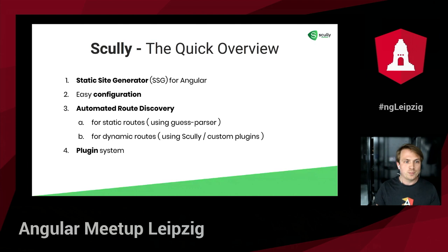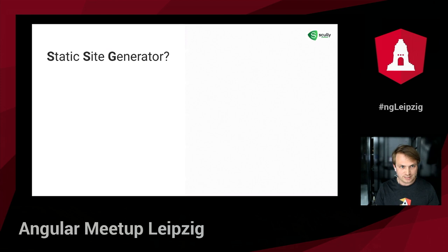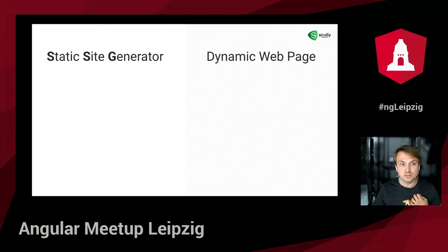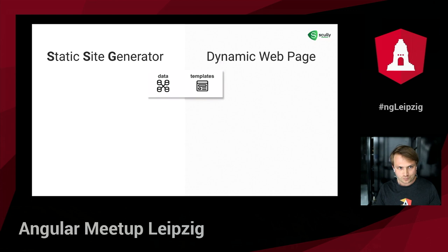Scully also supports a way to do optimized client-side navigation by storing the relevant data per page in a static JSON file. So what is a static site generator? To quickly explain it, I'll highlight the most important difference between content served as a typical dynamic web page — which we have been doing for almost 30 years — and content served by a static site generator.